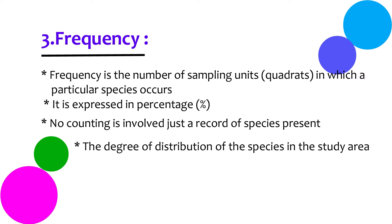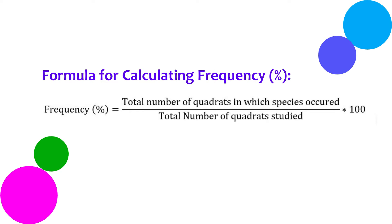Next, plant frequency. Frequency is the number of sampling units in which a particular species occurs and is usually expressed in percentage. To avoid confusion, remember that frequency percentage is not about the number of species, but about how many times the species are recorded in the habitat of interest. Therefore, it gives us information about the distribution of the species in the habitat of interest. The formula for frequency percentage equals the total number of quadrats in which the species has occurred divided by the total number of quadrats studied, multiplied by 100.